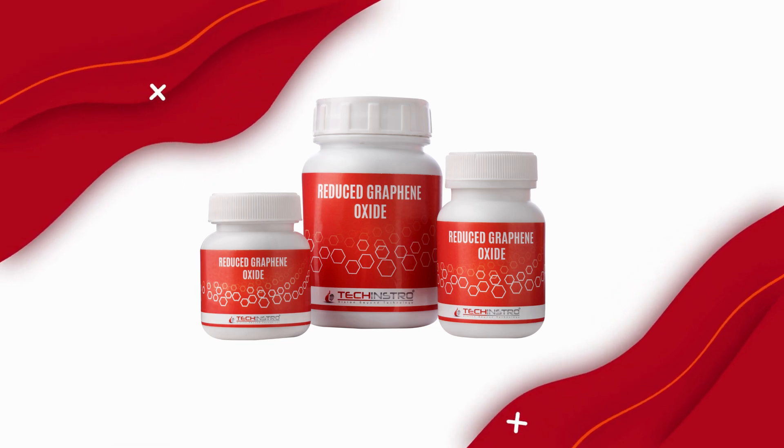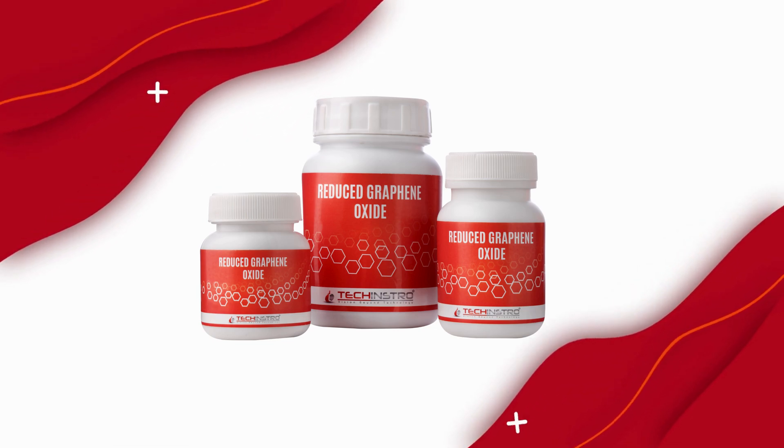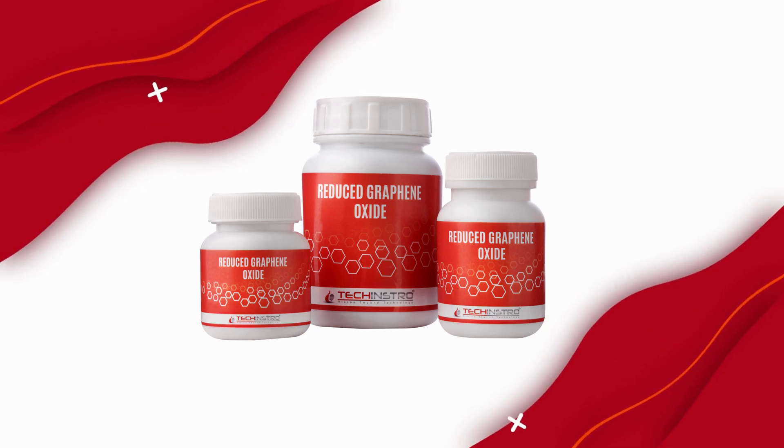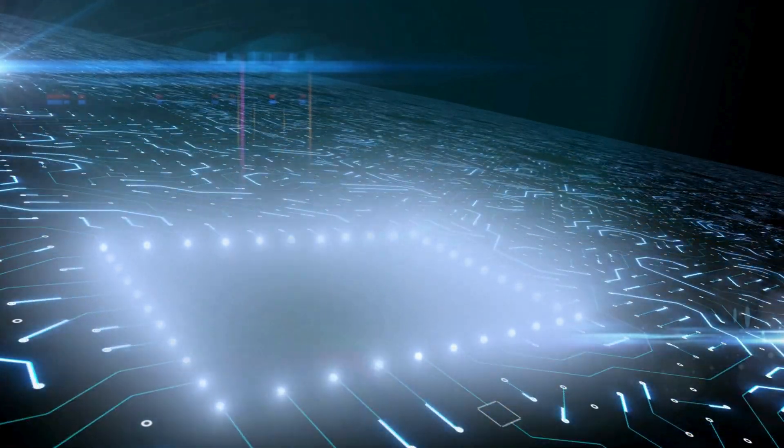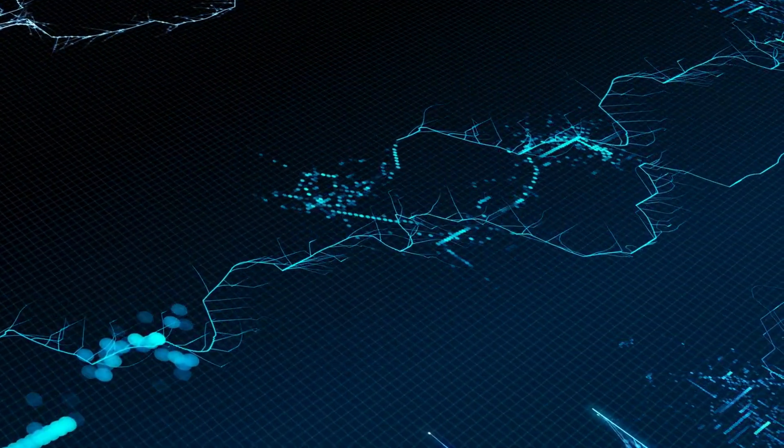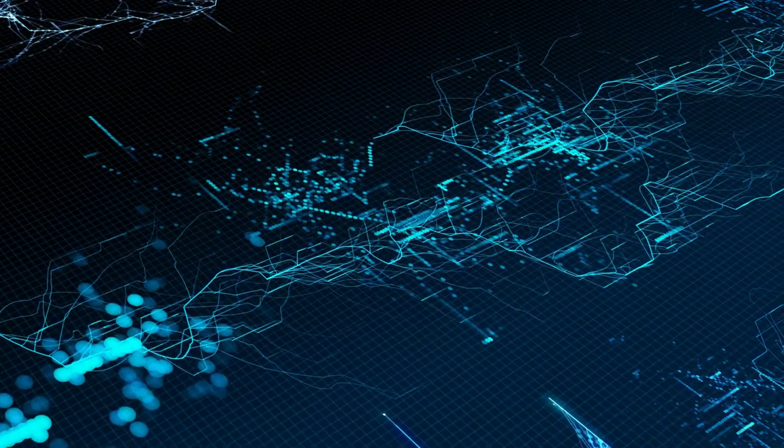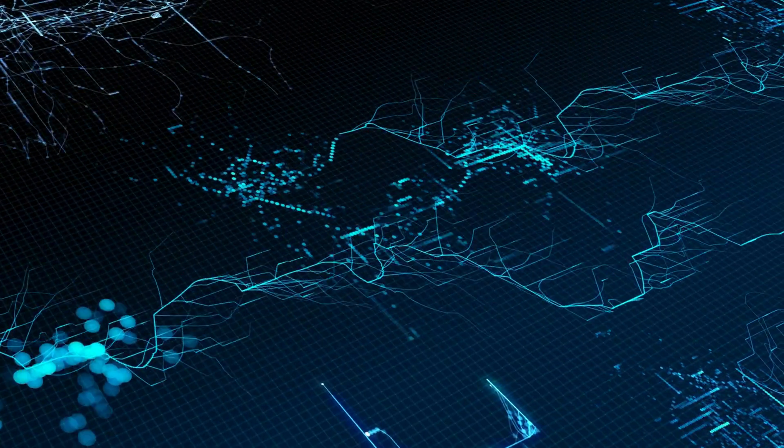Reduced graphene oxide inherits many of graphene's remarkable properties. It's incredibly strong, flexible, and lightweight. Plus, it's an excellent conductor of electricity and heat. But what makes rGO even more intriguing is its versatility. It can be used in various applications from energy storage devices like batteries and supercapacitors to sensors, electronics, and even in biomedical applications.